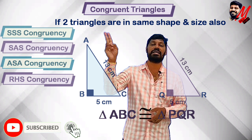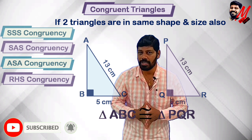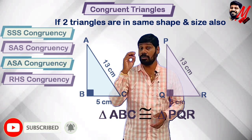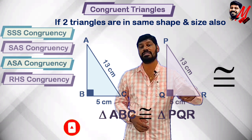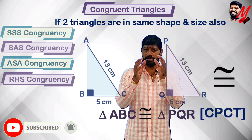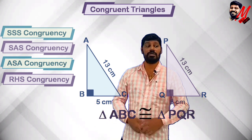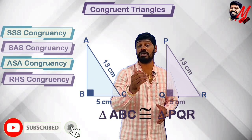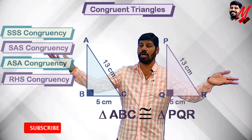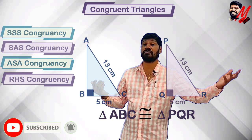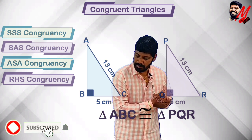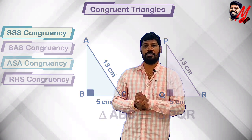So my dear children, the basic definition is: if two triangles are the same shape and same size, they are said to be congruent triangles. To prove congruency we use the conditions SSS, SAS, ASA, and RHS. Once congruent, all corresponding parts are equal — we use CPCT in every problem. In further videos we will discuss each congruency condition in detail with problems. Take care, bye bye.